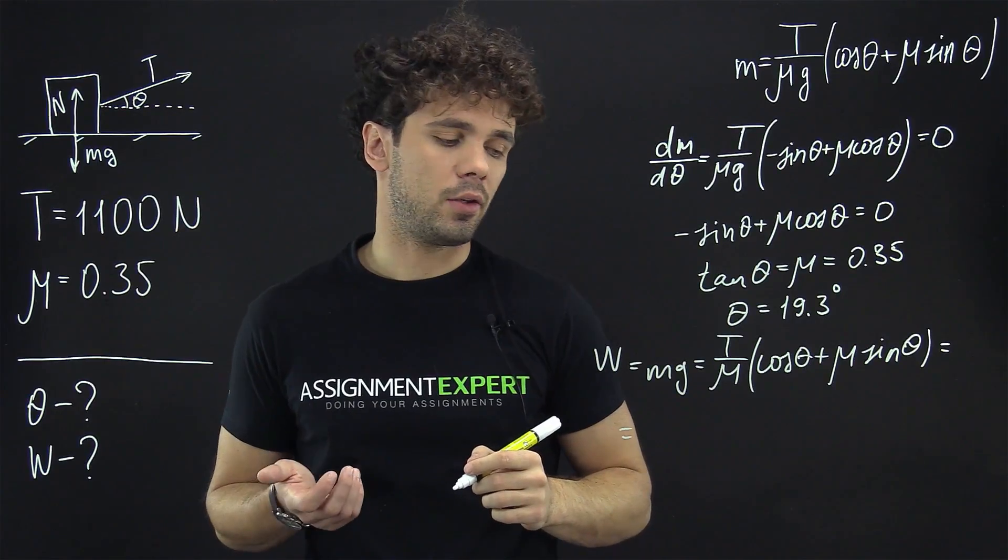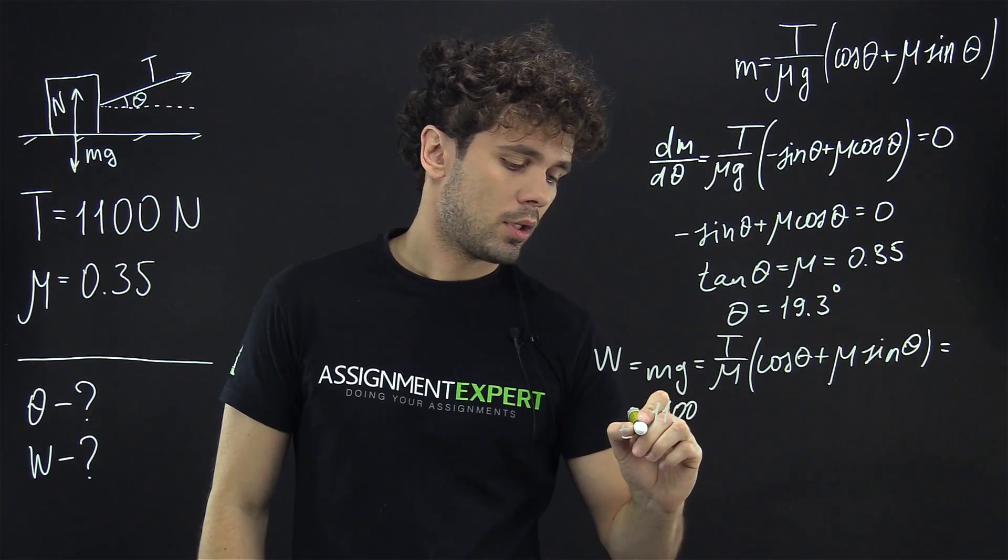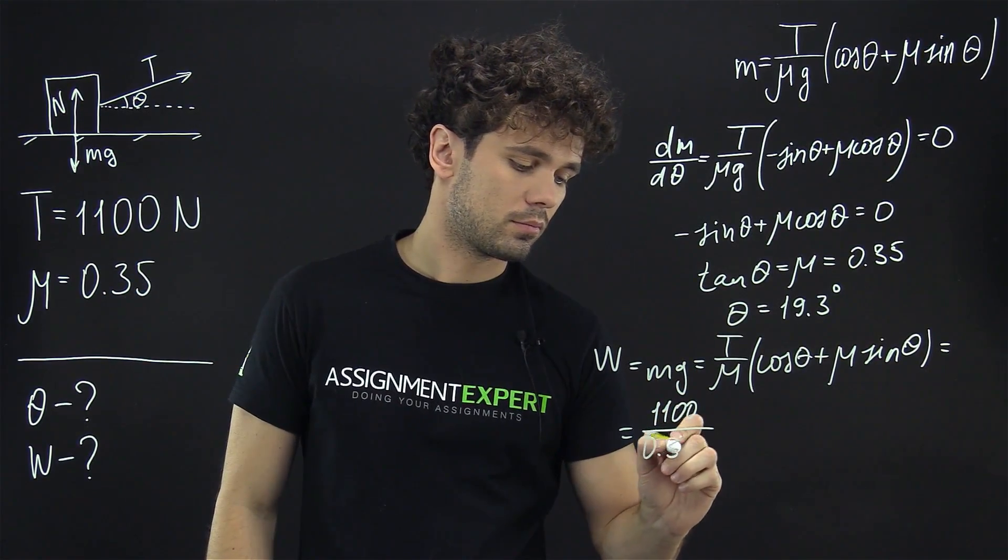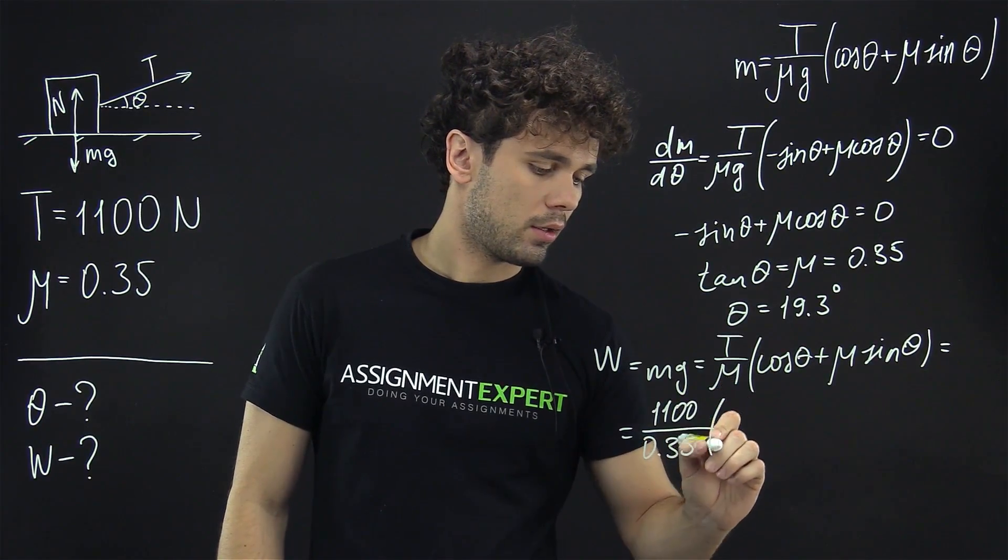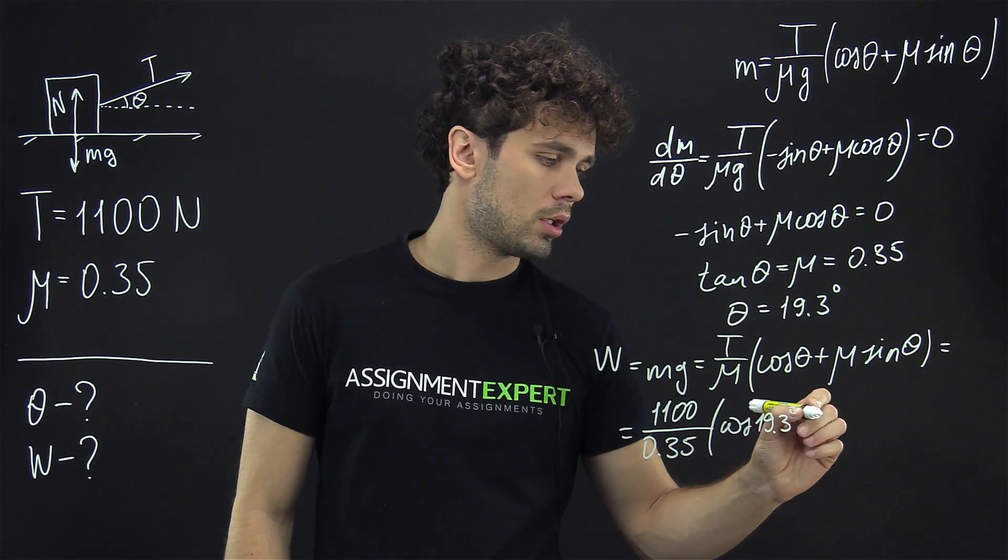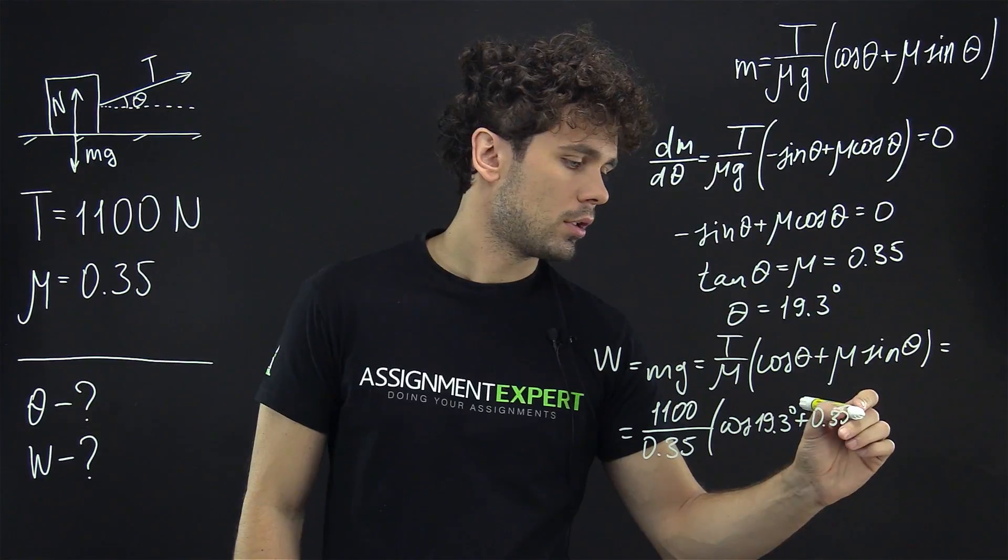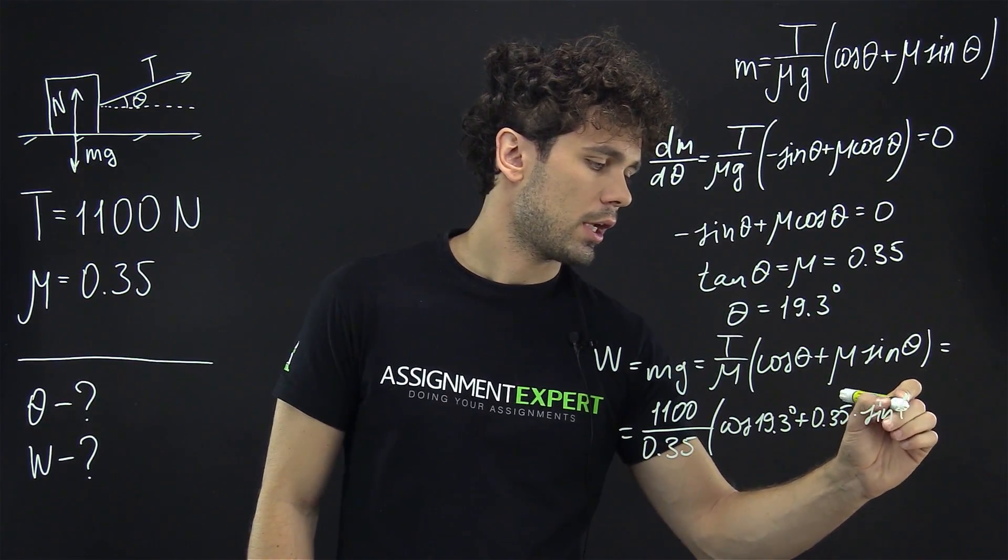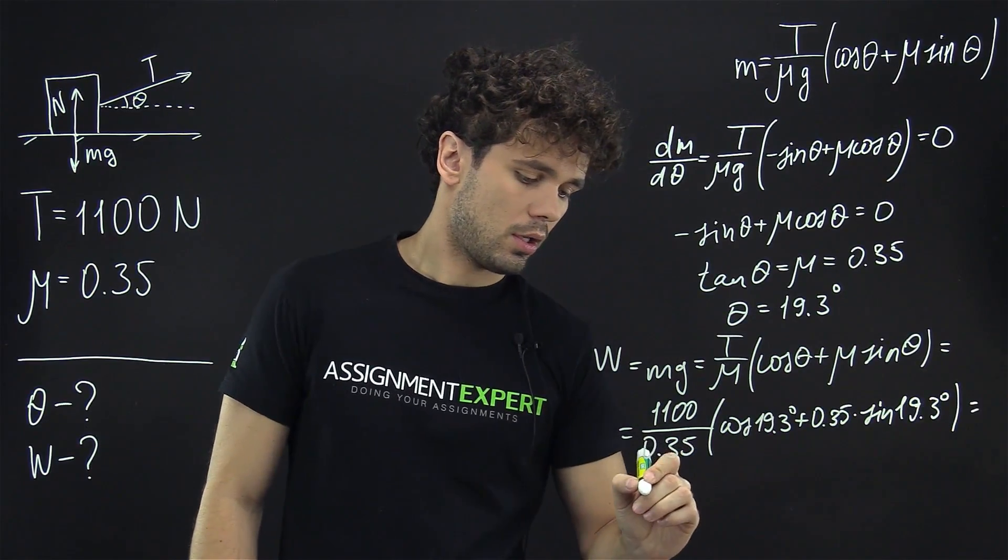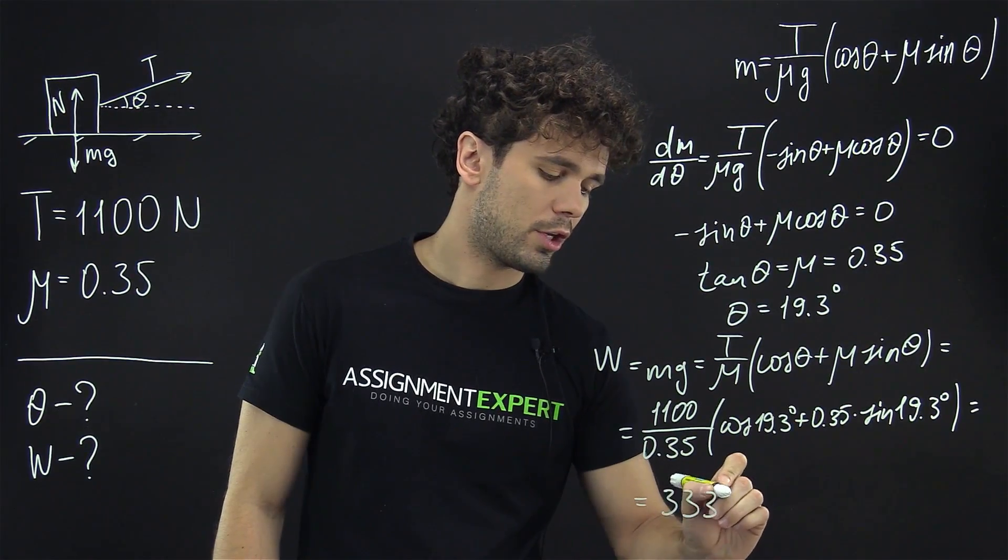Now let us take our values. T is 1100. We divide it by 0.35. And then in braces we have cosine of 19.3 degrees plus 0.35 times sine of 19.3 degrees. And the result of this is 3330 N.